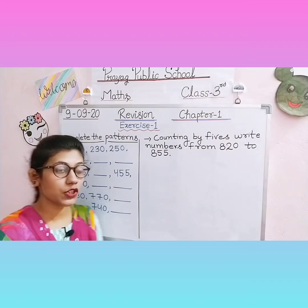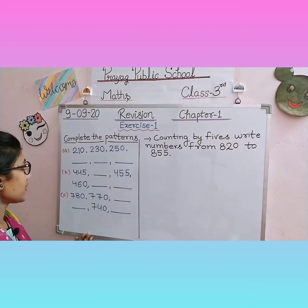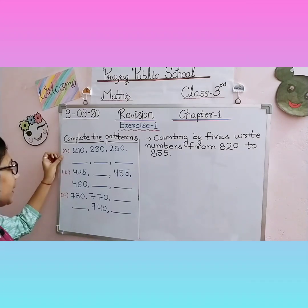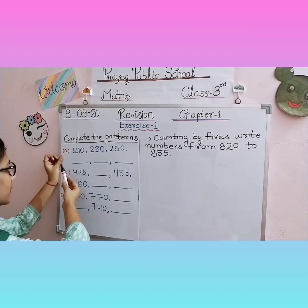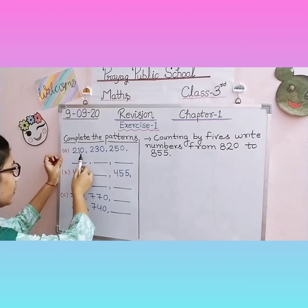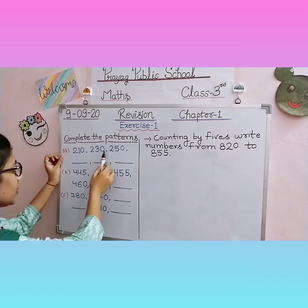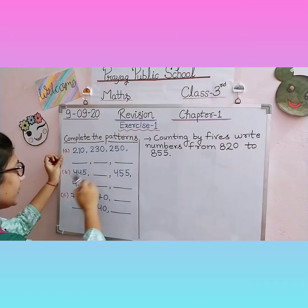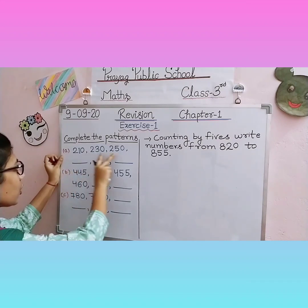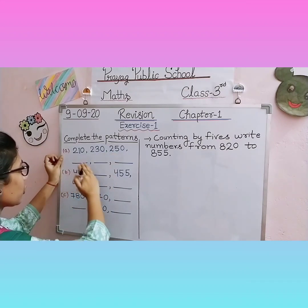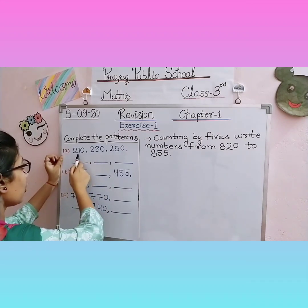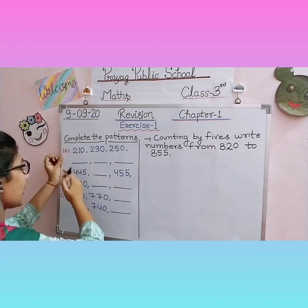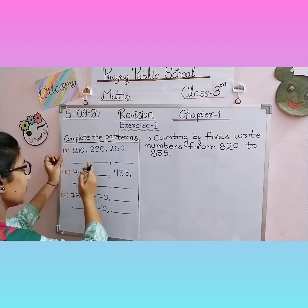The next type of question is: complete the given patterns. Question A — look at the numbers very carefully: two hundred ten, two hundred thirty, two hundred fifty — then there are three blanks that we need to fill. We check the numbers to see how we will complete this pattern. Two hundred ten to two hundred thirty — what do we add to two hundred ten to get two hundred thirty?